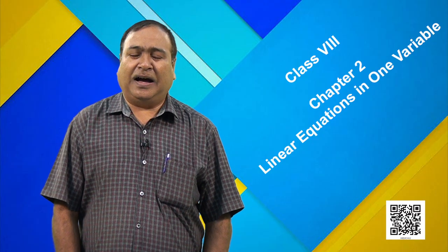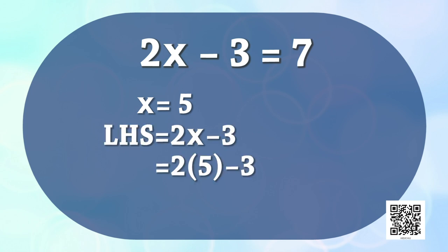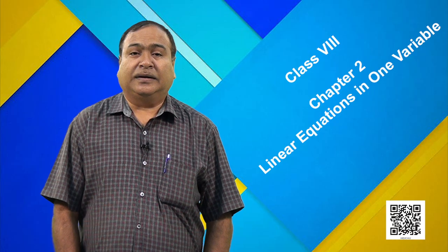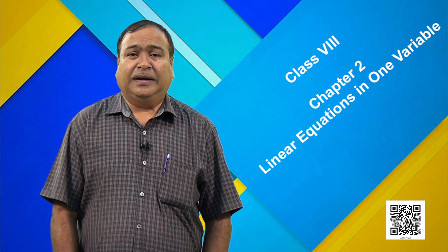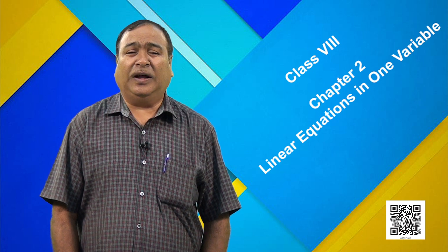Now, let us consider another equation: 2x − 3 = 7. Suppose you put x = 5 in this equation. Then the LHS, that is 2x − 3, becomes 2 × 5 − 3, which is 10 − 3, that is equal to 7, which equals the right hand side.